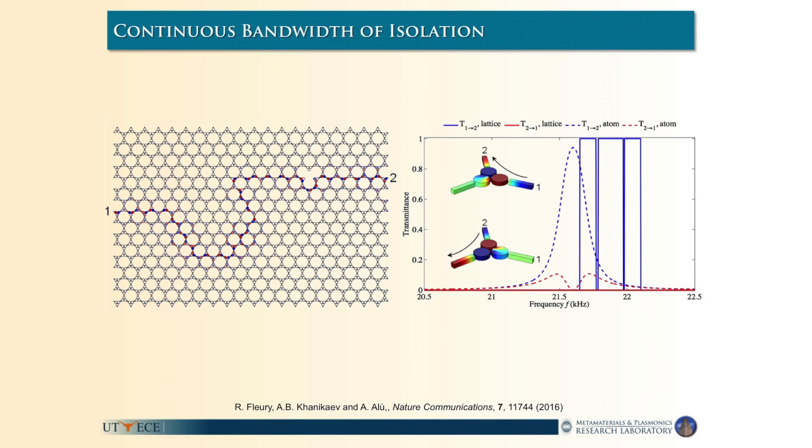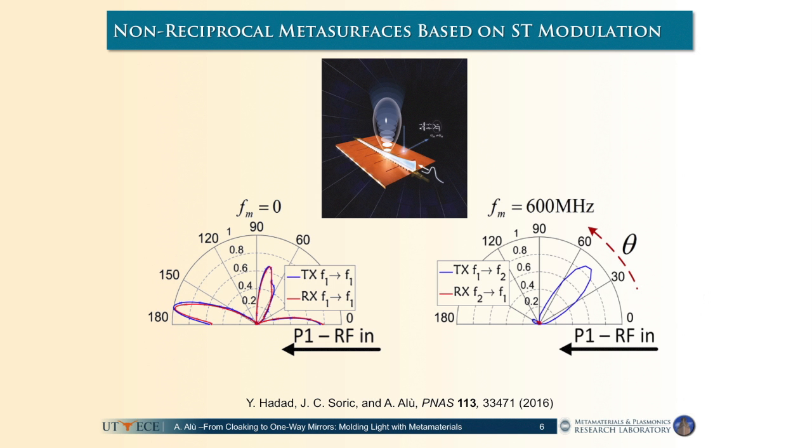So break reciprocity, create isolation based either on time-varying elements that form the surface or large nonlinearities that allow you to break the symmetry that is fundamentally dictated by time reversal, by the fact that waves propagate equally when you reverse time. Using nonlinearities or time variations on the surface you can actually break these inherent symmetries.